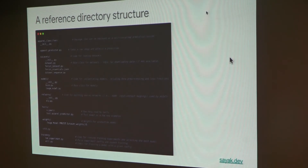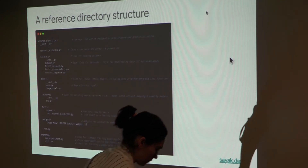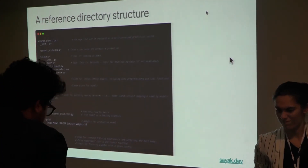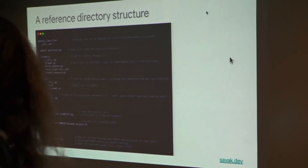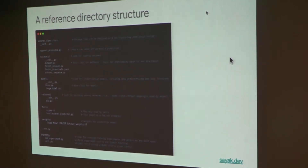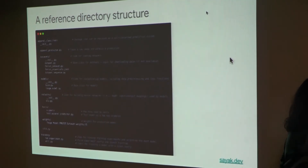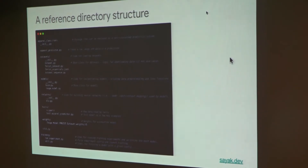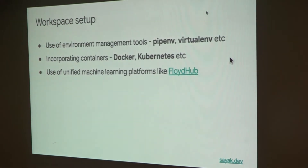Just take a moment and go through this directory structure and note any questions you might have. As you can see, there's a different directory for datasets, a different directory for models, a base directory for developing your neural networks, a different directory for test cases, and an entirely different directory for serializing your network weights. I hope this directory structure is beneficial for you.